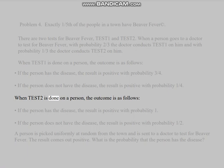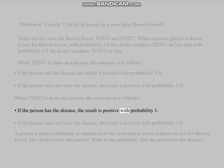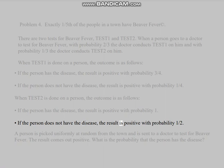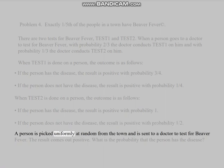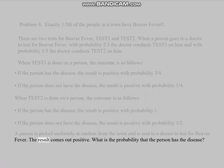When TEST2 is done on a person, the outcome is as follows: If the person has the disease, the result is positive with probability 1. If the person does not have the disease, the result is positive with probability 1/2. A person is picked uniformly at random from the town and is sent to a doctor to test for beaver fever. The result comes out positive. What is the probability that the person has the disease?